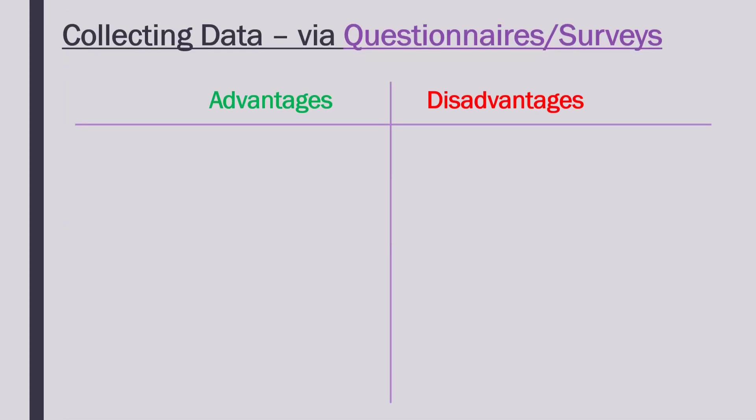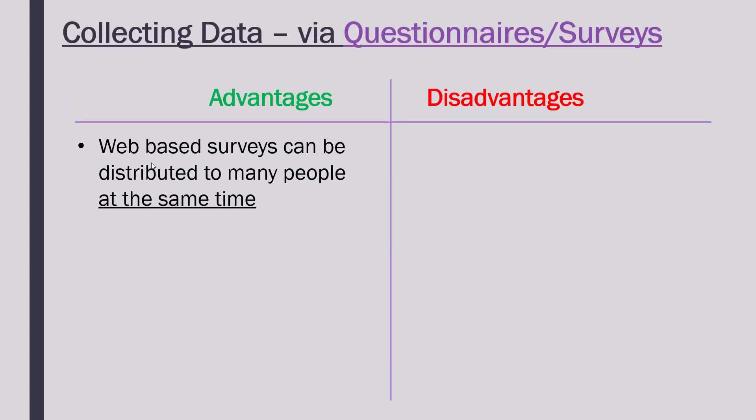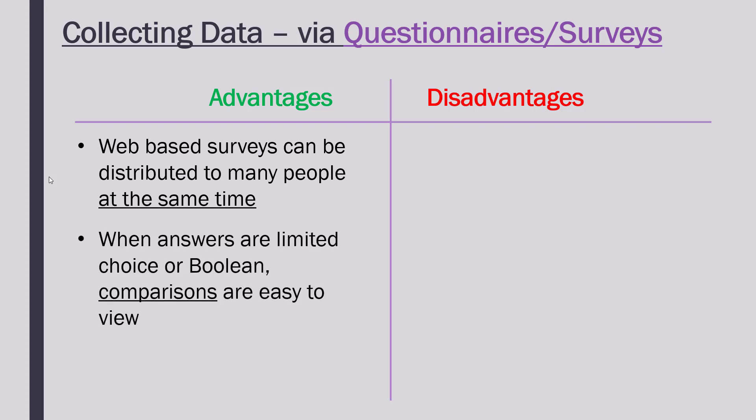So what's good about questionnaires and surveys? Well, if they are based online it's very easy to distribute to many people at the same time. If you send an email you can send it to thousands and thousands of people if you wish. Hard copy is harder — you have to post them or hand them out in person. Also, if you frame your questions so that the answers are of a limited choice — radio buttons, drop-down menus, tick lists, or boolean true-or-false answers — it's very easy to make comparisons.